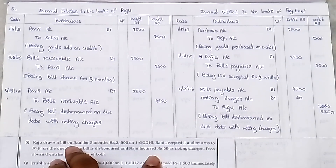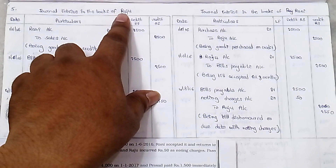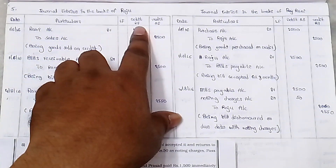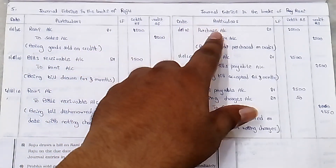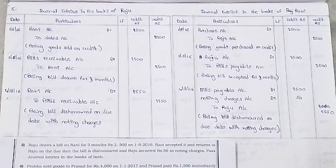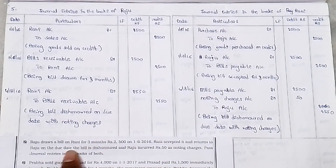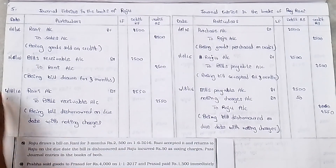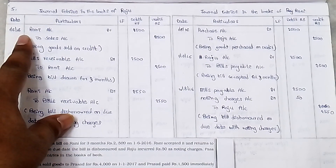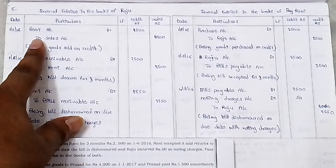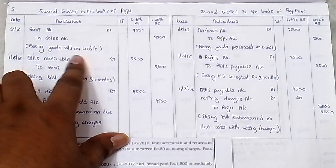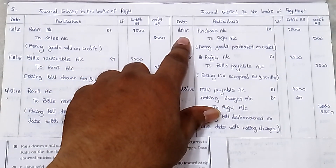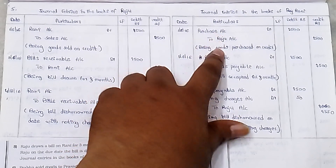General entries in the books of Rajoo and Rani — with columns: date, particulars, LF, debit rupees, credit rupees. On 1/6/2016, Rajoo sold goods to Rani. Entry: Rani account debit to Sales account, being goods sold — amount 2500.